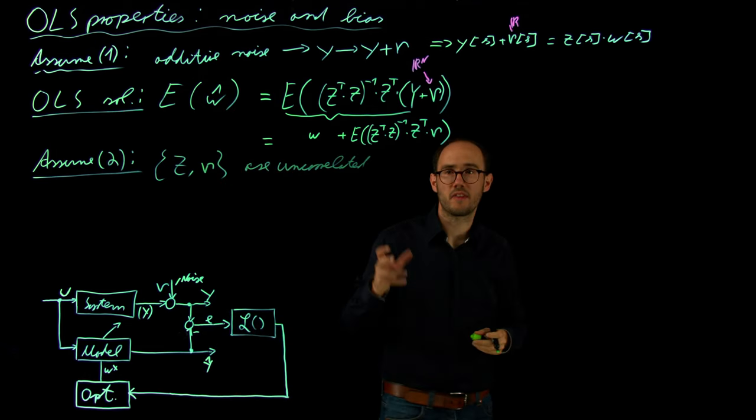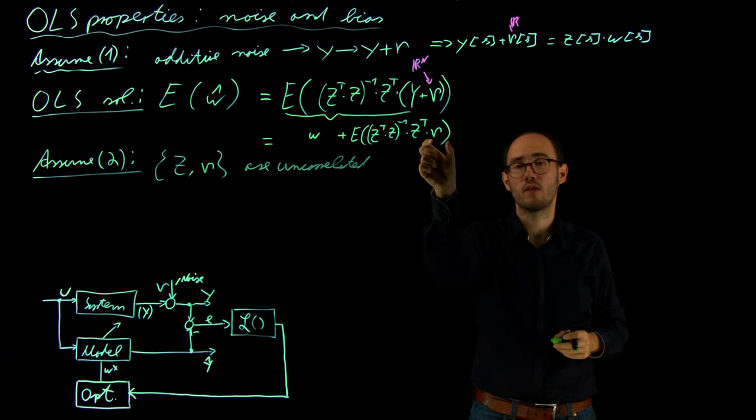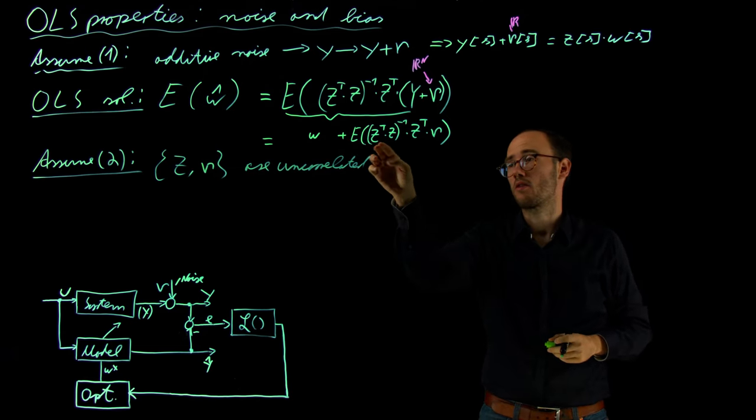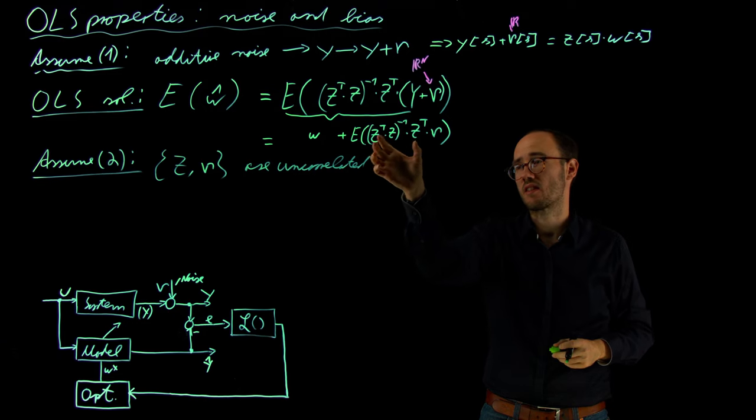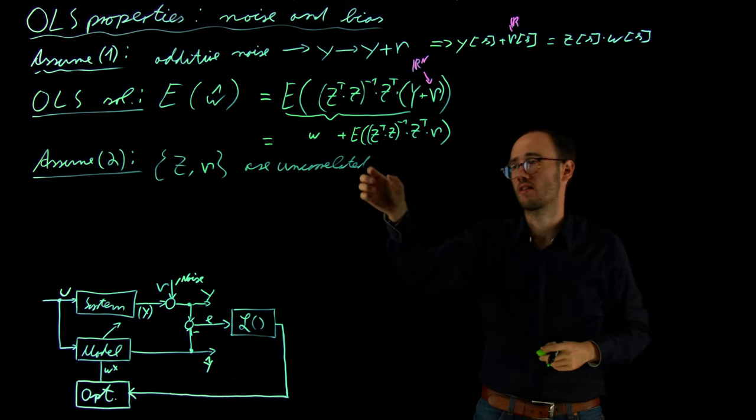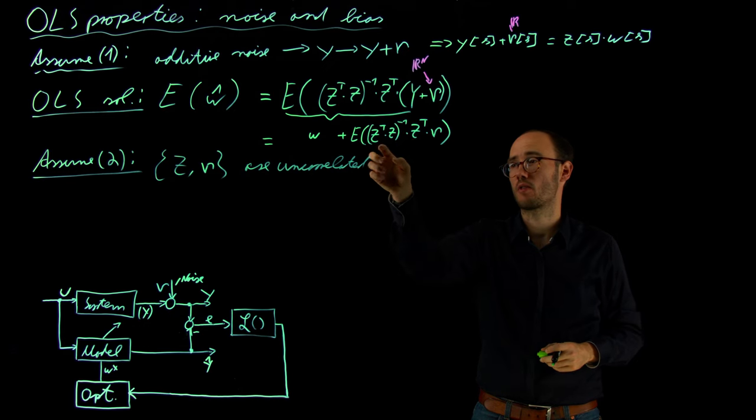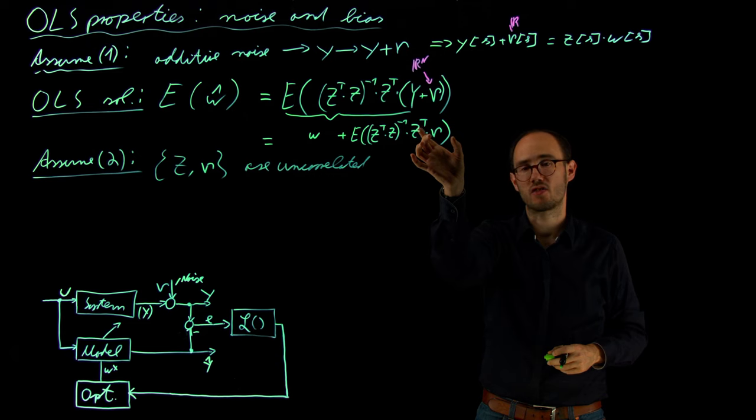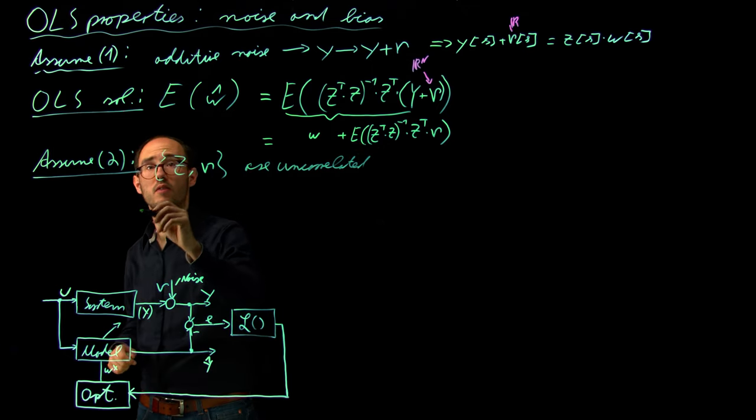Of course, if we do so, then we can basically apply this expectation operator only to the noise, because we assume that Z actually is a deterministic quantity. It doesn't depend on this output noise. It is uncorrelated. So the expectation of all these Zs is without any impact because these are deterministic quantities.